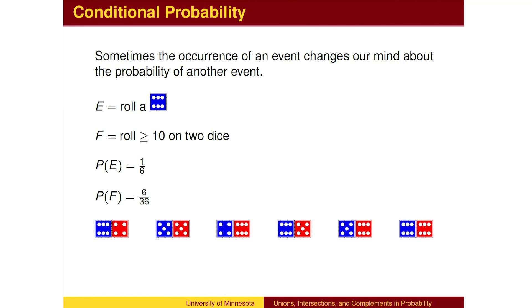When we learn of the outcome of one of the two dice, the blue die, we change our estimate of the likelihood. Now that we know that the blue die landed 6, the probability of the event F has increased.